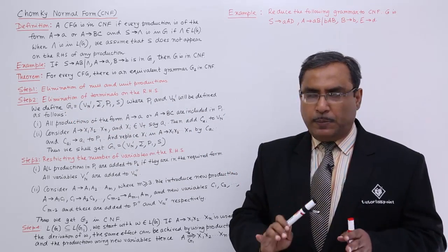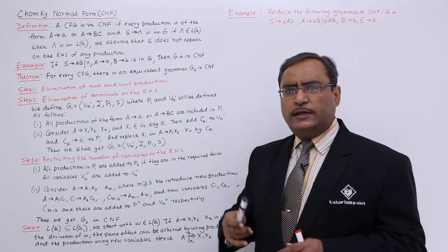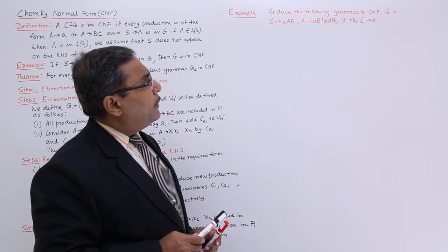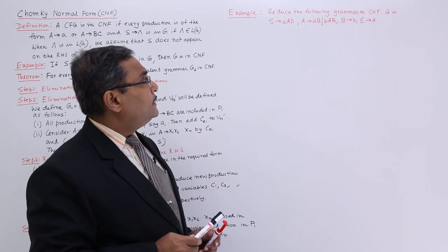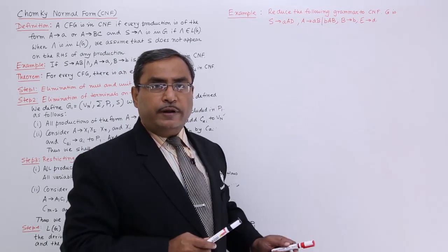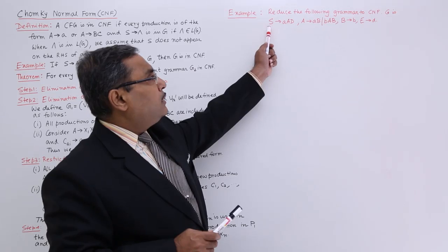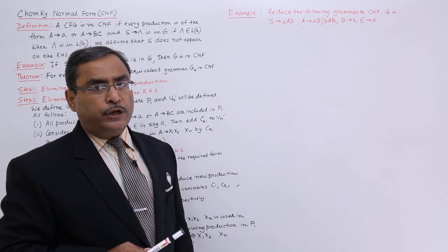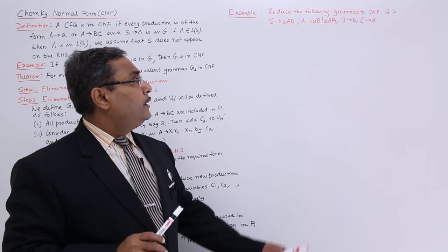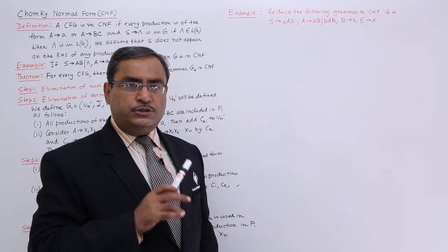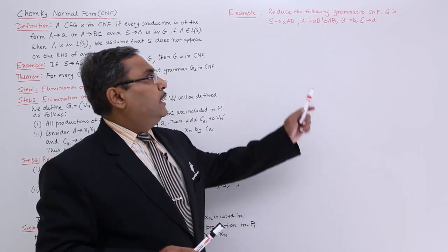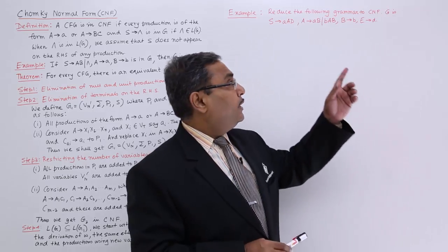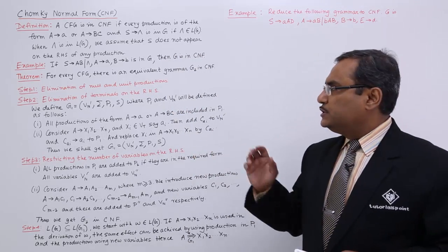Step 1 has been completed. So let me come to Step 2. Along with the theory, let us discuss the example also. The example is: reduce the following grammar to CNF. Looking at the given production rules — are there any non-terminal produces null? No. So this grammar is already null production eliminated. Are there any productions like non-terminal produces non-terminal? No. So this grammar is already unit production eliminated. Step 1 has been executed on this grammar.